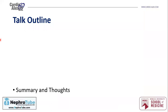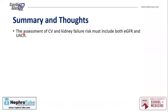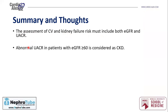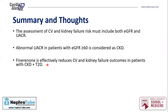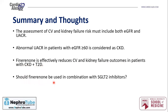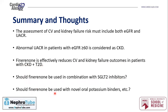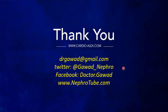In summary: assessment of cardiovascular and kidney failure risk must include both eGFR and urine albumin-to-creatinine ratio. Normal urine albumin-to-creatinine ratio in patients with GFR ≥60 is considered CKD. Finerenone effectively reduces cardiovascular and kidney failure outcomes in patients with CKD and type 2 diabetes. Finerenone should be used in combination with SGLT2 inhibitors, and with novel oral potassium binders if needed, though cost may be a barrier. Thank you for watching this lecture.